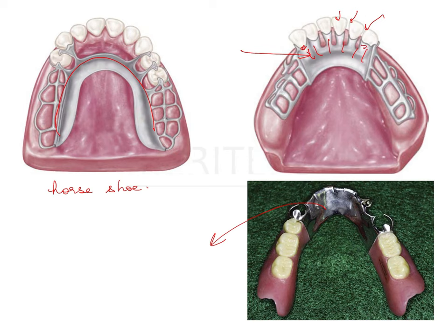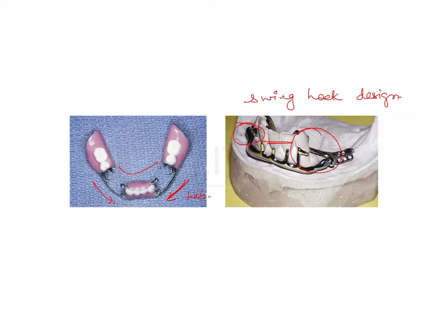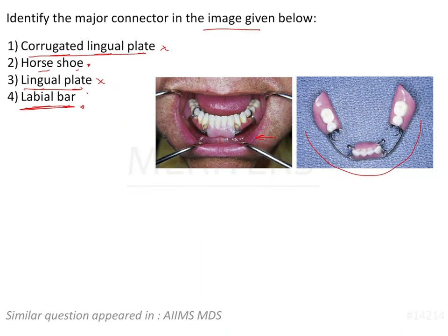So these are a few things to keep in mind: swing lock and lingual plate with its modifications. The correct answer here is that this image shows a labial bar major connector. Thank you.